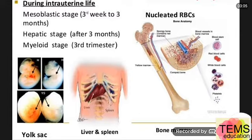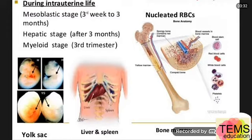In postnatal life, up to the age of five to six years, RBCs are produced in the red bone marrow of all bones. From six to twenty years, RBCs are produced by the long and membranous bones. After the age of twenty, RBCs are produced only by the membranous bones.